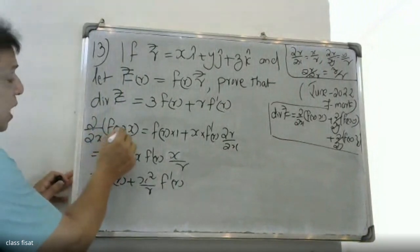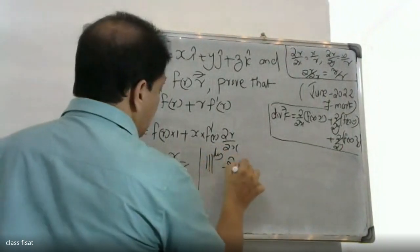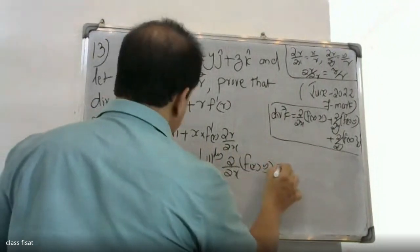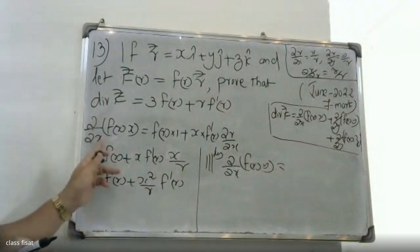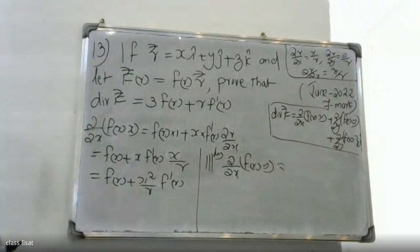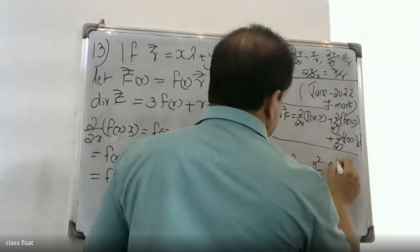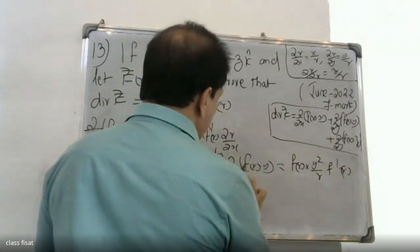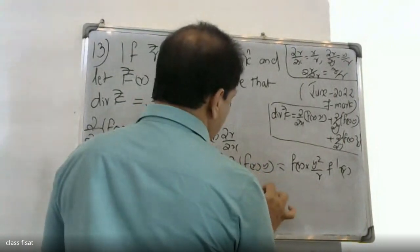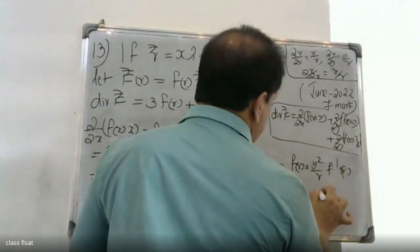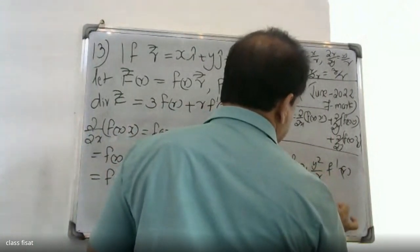Similarly, ∂/∂y of f(r)·y gives f(r) plus y squared over r times f'(r), and ∂/∂z of f(r)·z gives f(r) plus z squared over r times f'(r).